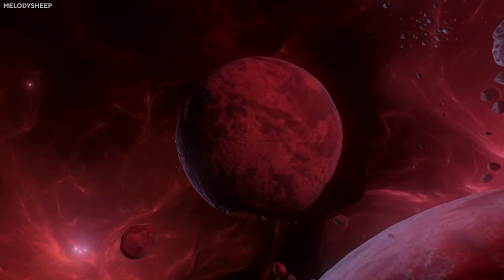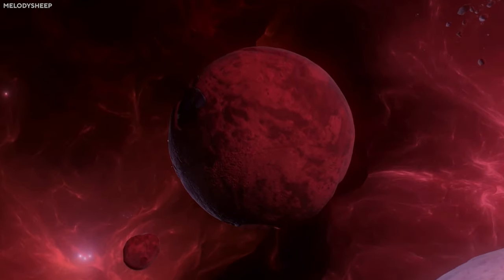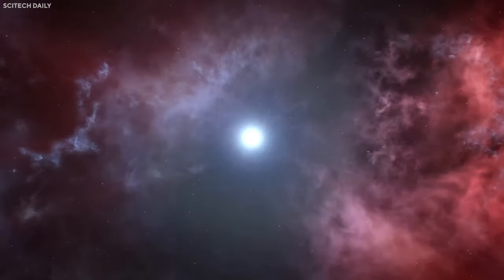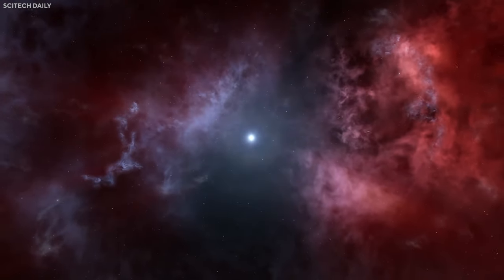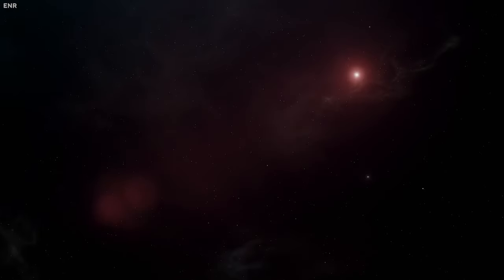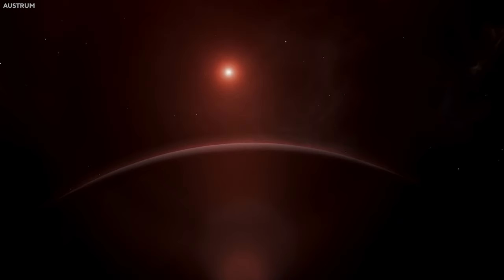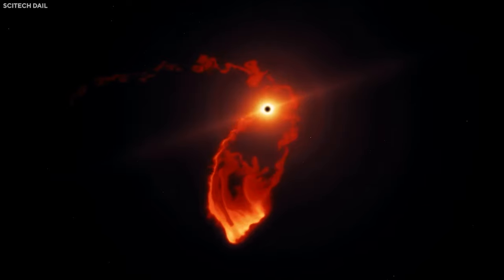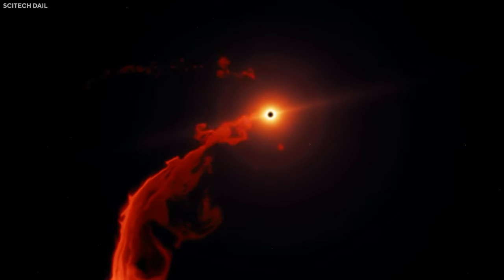However, as the dust begins to disperse or is pushed away by the star's radiation pressure, the veil lifts. This dust could explain Betelgeuse's subsequent return to its regular brightness levels. Regardless of the exact cause, these recent events suggest that Betelgeuse has more surprises in store, and many speculate that Betelgeuse may be approaching the twilight of its life, potentially leading to another supernova event.